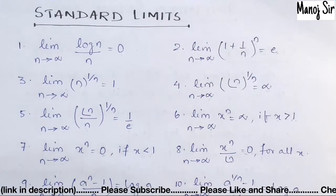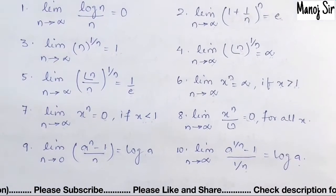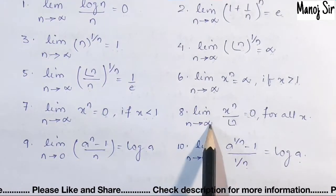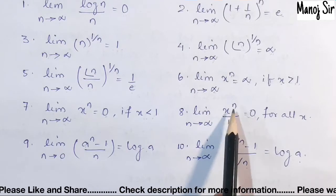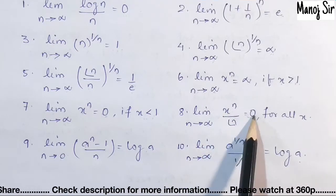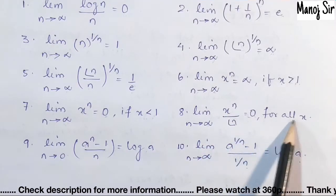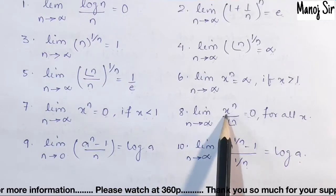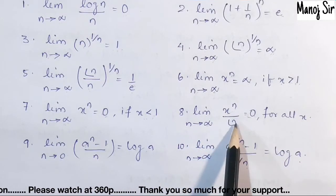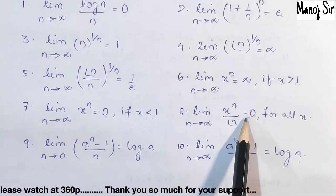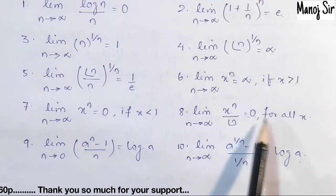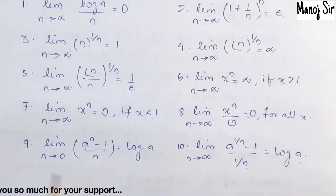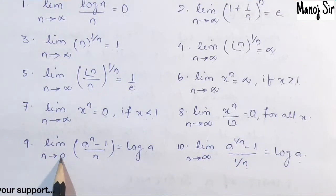Eighth standard limit: limit n tends to infinity of x^n / n! is always 0 for all values of x. I repeat — limit n tends to infinity of x^n / n! is always 0 for all values of x.